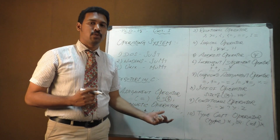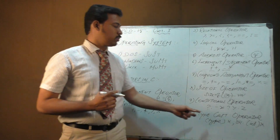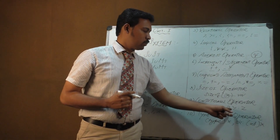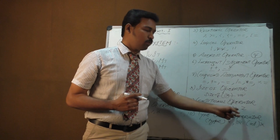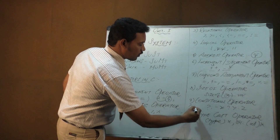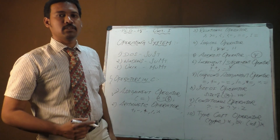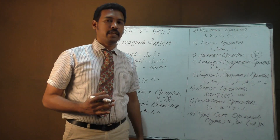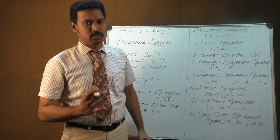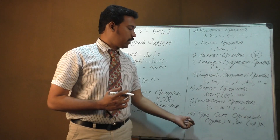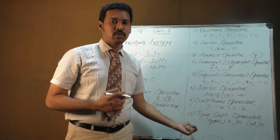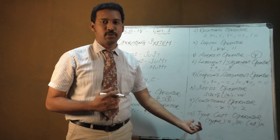The ninth is the conditional or ternary operator, which checks a condition using two or three values. It uses the question mark (?) and colon (:) symbols. This operator is used to check different conditions among values in a C program.